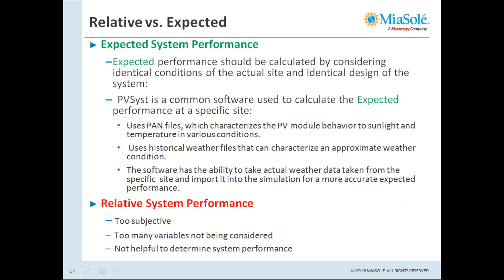To do a proper actual-versus-expected comparison, one approach is to use software like PVSyst, which can take PAN files that characterize PV modules in terms of behavior under light and temperature. This software utilizes weather files using weather data averaged over 10, 20, or even 30 years at a particular location to simulate accurate expected performance of a modeled system. You can even import actual weather data collected in the field for a closer comparison, ensuring you're using truly comparable performance data.